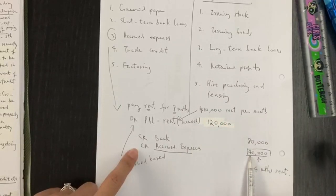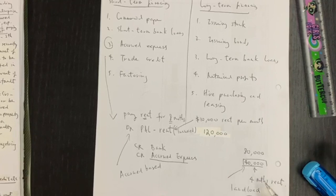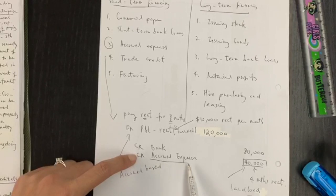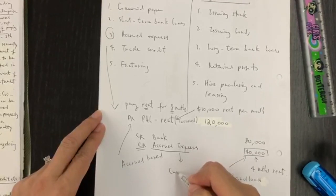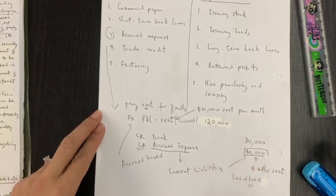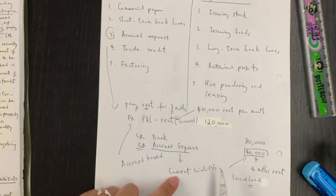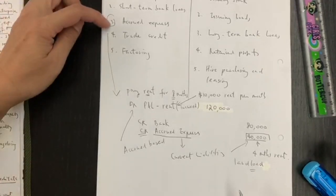Since we owe people $40,000 — we owe our landlord four months' rent — you can see we create something on the credit side and we give it the name accrued expenses. This credit item will be a kind of current liabilities. This is the idea of accrued expenses: we owe people something and we are going to pay later. So this is another kind of source of financing. This is number three — accrued expenses.